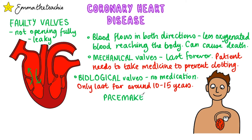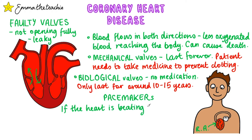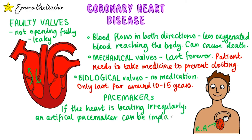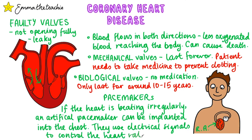Next up are pacemakers. In the last video about the heart, you will have learned that the natural pacemaker cells of the heart are in the right atrium, but sometimes these cells aren't functioning properly. They can make the heart beat too fast or too slow, and in both cases this causes problems. So if the heart is beating irregularly, an artificial pacemaker needs to be implanted into the chest. This is attached to the heart with two wires, and then it can release an electrical signal which causes the heart to contract at the rate that's needed. These devices are tiny and life-saving.